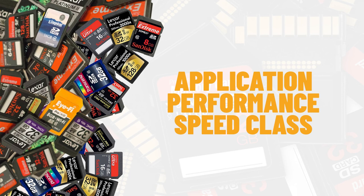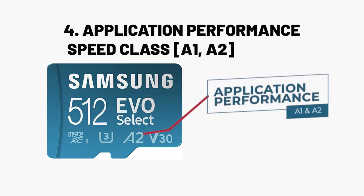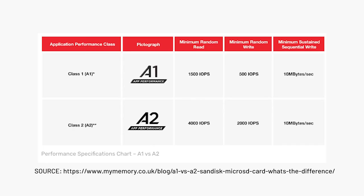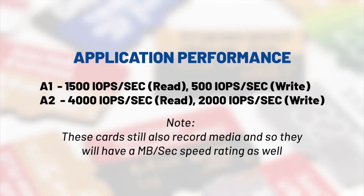More and more SD cards now have an additional speed class called the Performance Application Speed Class. This is currently not relevant to video production or photography. Devices like smartphones can now run apps directly off SD cards, so there was a need to develop cards that could manage applications loaded onto them. The A1 and A2 speed classes refer to how fast and efficiently the card can run the input and output operations of an app installed on an SD card, measured in input and output operations per second.